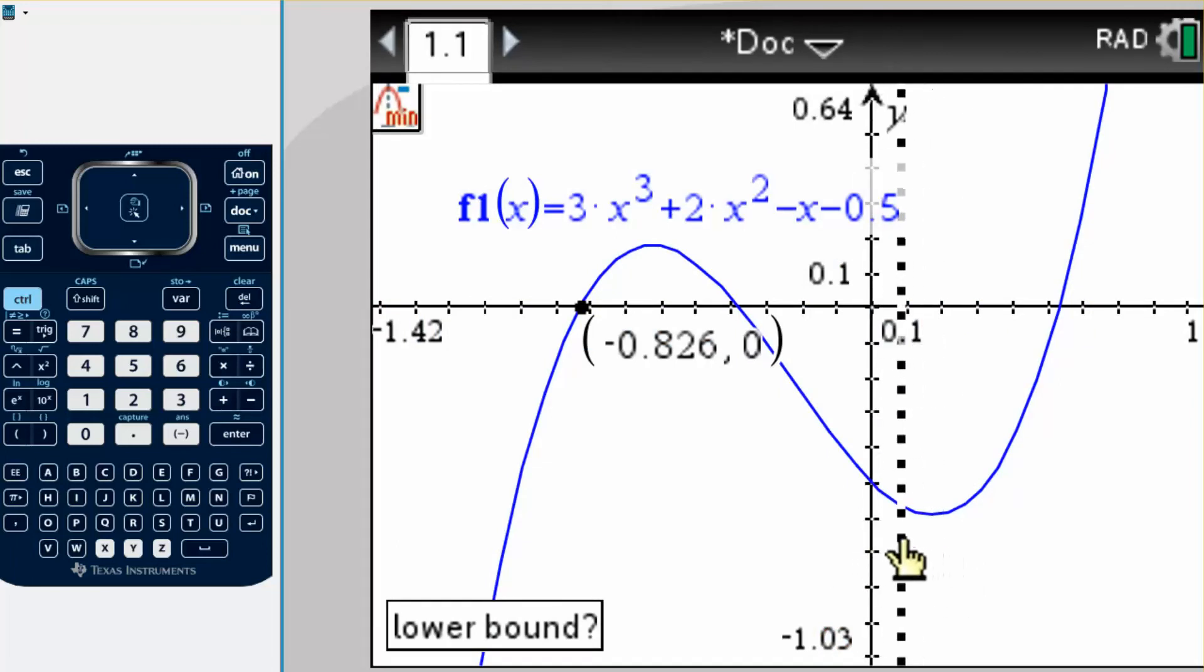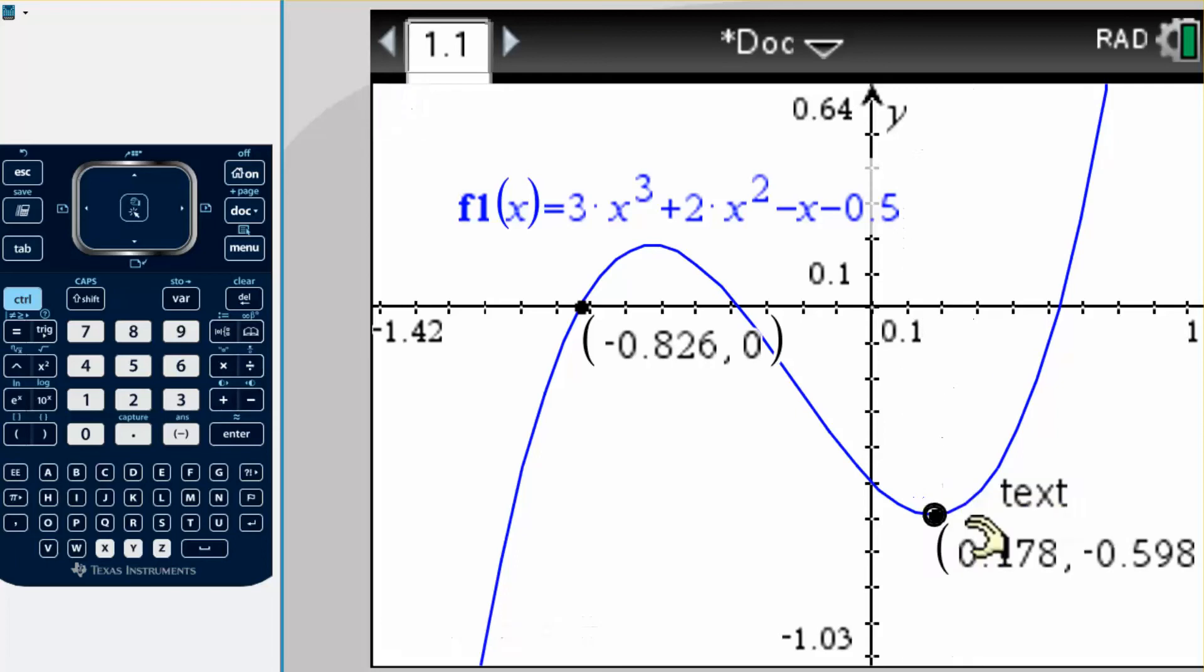And again, you're just going to go to the left and then the right, and it finds it right there. It's saying that's my minimum point, so x value of that, y value of that. That's how you find those things.